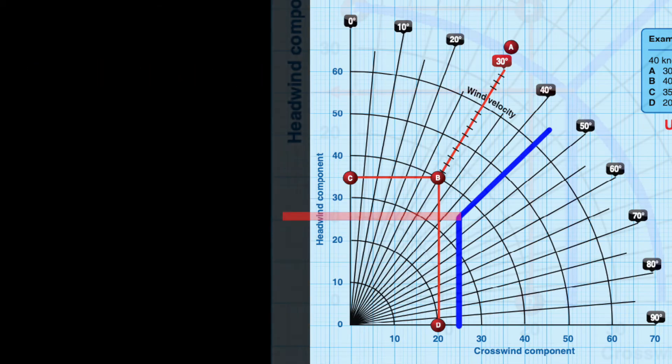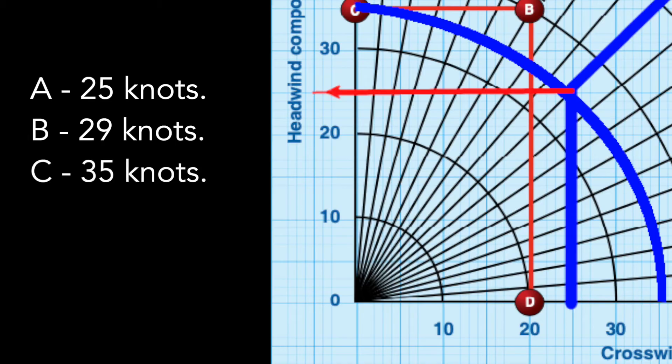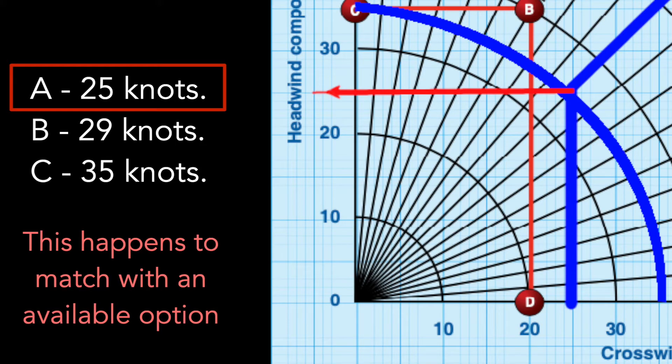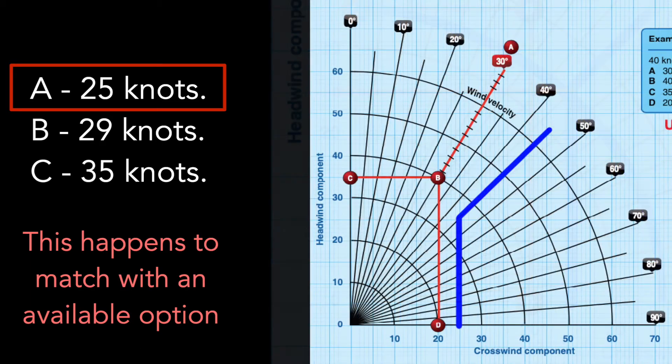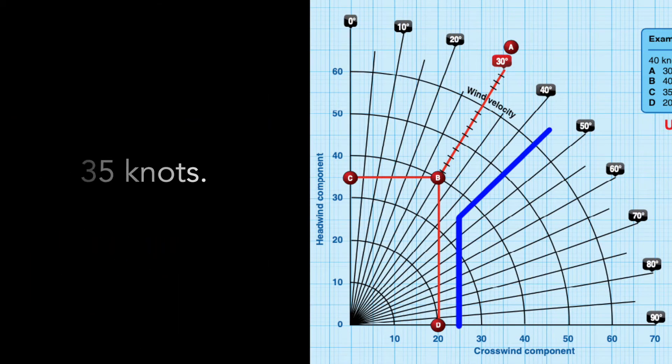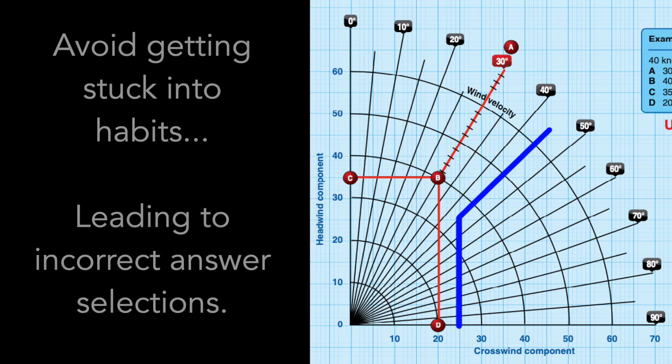If we didn't draw out the curved line and instead made the quick mistake of drawing straight across, it would tempt us to make the wrong selection of answer A, 25 knots, which doesn't even fit the context here. Be careful about how sometimes we can get so familiar with a routine that habits can be tempting to continue even when they don't work.